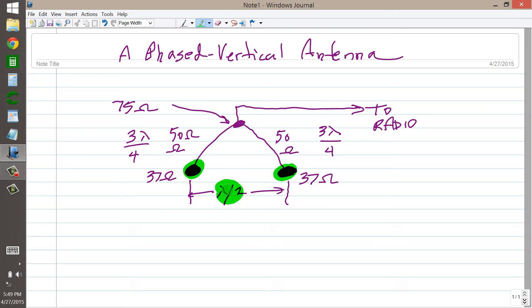A free space half wavelength apart. What you do then is you take two lengths of 50 ohm coaxial cable, and they have to be 3 quarters of a wavelength long, because if they were only one quarter of a wavelength long, they wouldn't be long enough to reach the center.